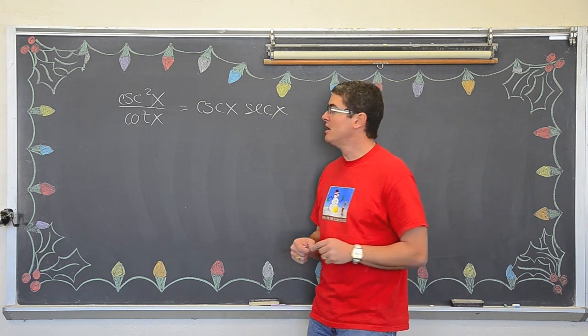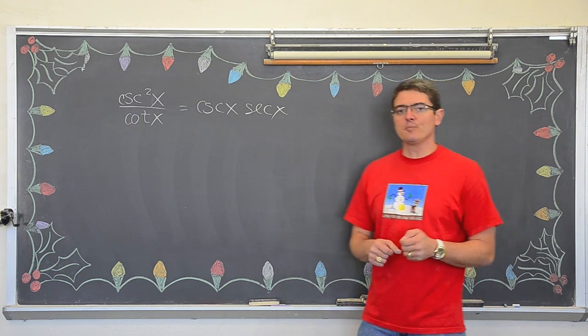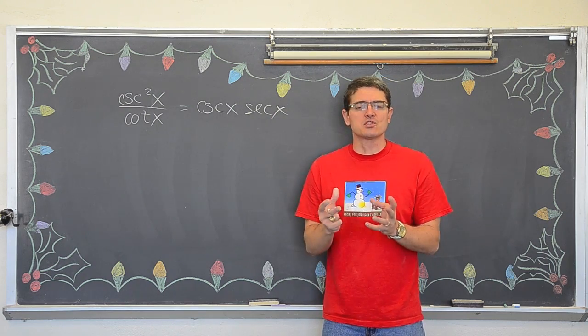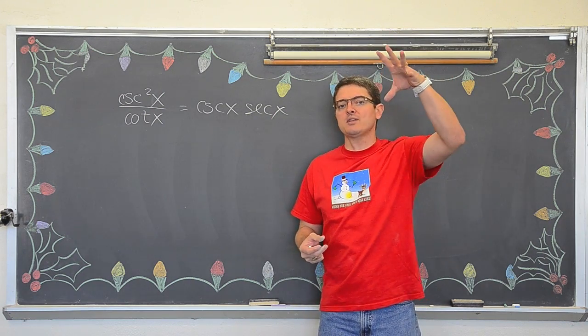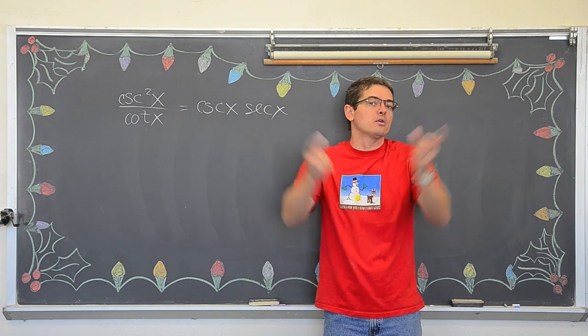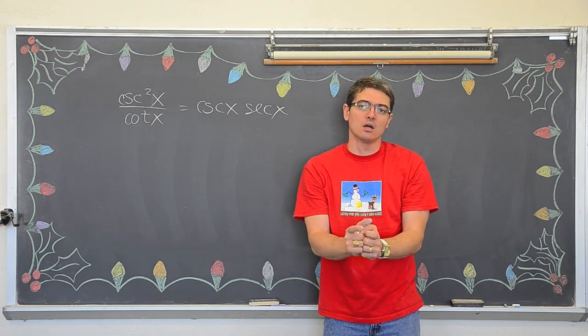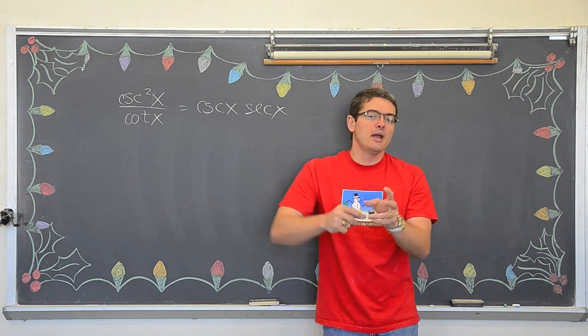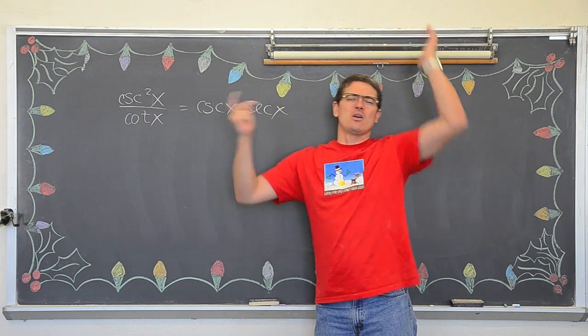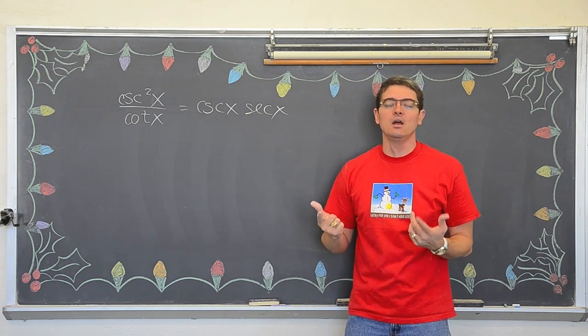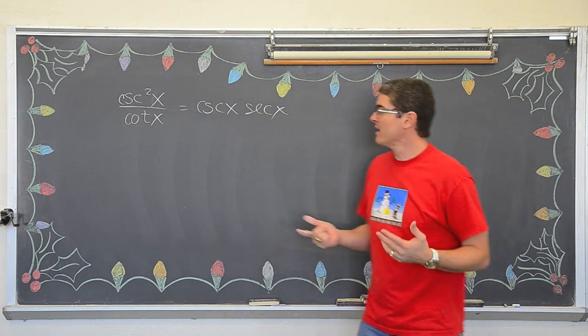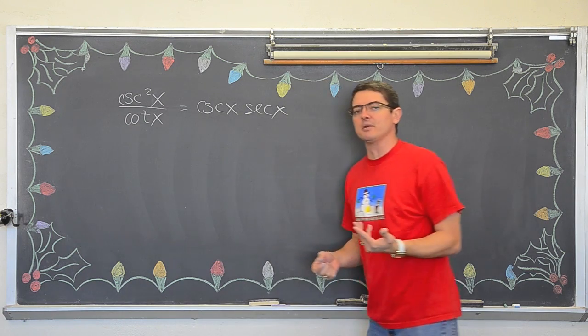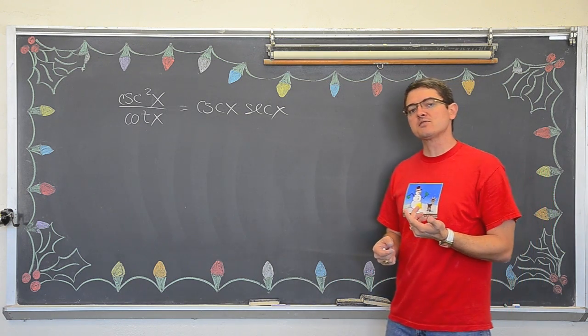And you also, when you do proofs, you want to attempt to work or start with the more complicated side and simplify. Think of like a tree. If you are at the top of the tree where it is all complicated and there are branches all over the place, and you work your way down the tree, you are going to come down that one trunk. You are going to simplify down that singular answer at the bottom. Whereas if you start at the bottom at something simple and you start adding things and making it more complicated, you could go in all kinds of different directions. You could be anywhere up inside the tree. So you always want to try and simplify. And these kind of honestly look sort of equally difficult or complicated. So I am just going to pick a side and write it in terms of sine and cosine.